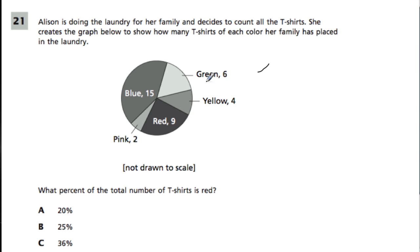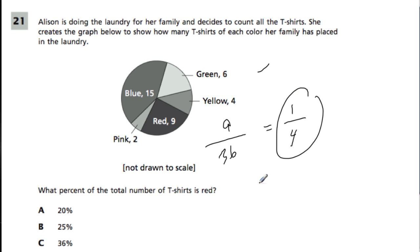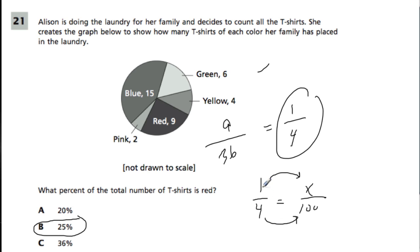Here we have a circle graph with numbers, and they want to know the percent of t-shirts that are red. There are 9 red t-shirts. Adding all up: 15 plus 2 is 17, plus 19 is 36, plus 4 and 6 is another 10, so it's 9 out of 36. Reducing: 9 divided by 9 is 1, and 36 divided by 9 is 4 — that's one-fourth. One-fourth as a percent: 4 times 25 is 100, so the answer is 25%.